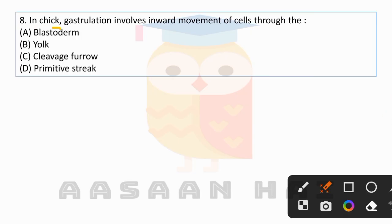The first question asks: In chick, gastrulation involves inward movement of cells through the: (A) Blastoderm, (B) Yolk, (C) Cleavage furrow, or (D) Primitive streak.